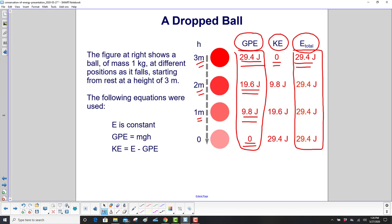Kinetic energy will be the total energy minus GPE. So 29.4 minus 29.4 gives zero. 29.4 minus 19.6, 9.8. 29.4 minus 9.8, 19.6. Hey, that's kind of cool.